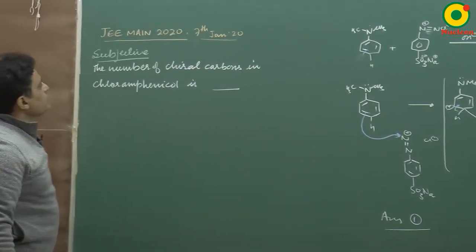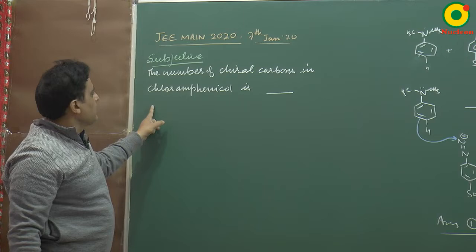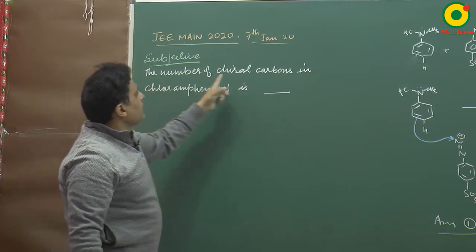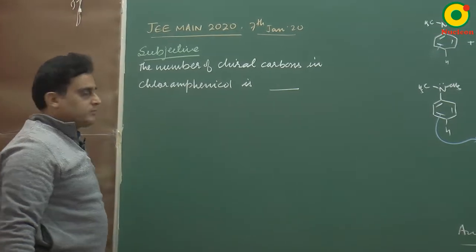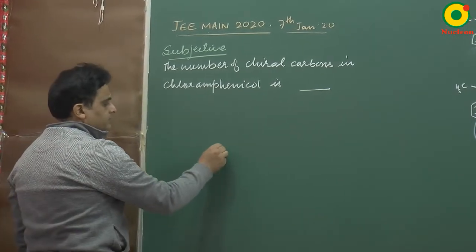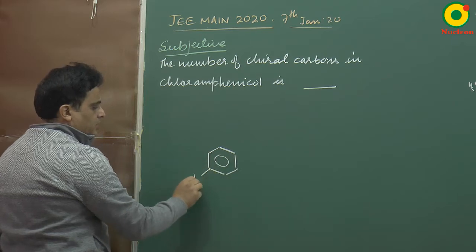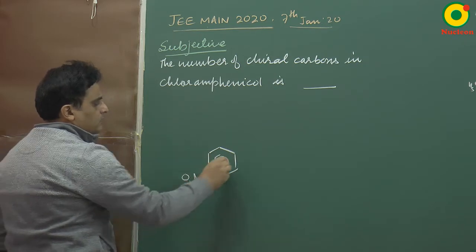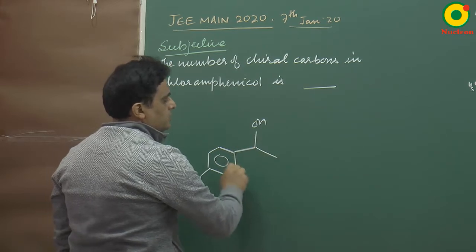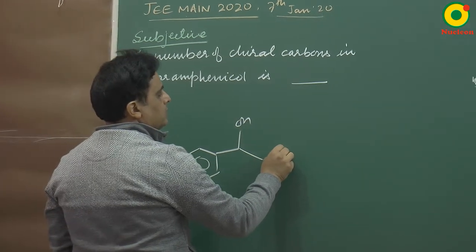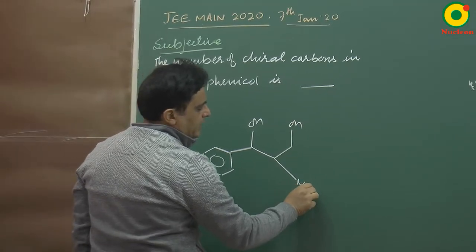JEE Main 2020, 7th January subjective question: the number of chiral carbons in chloramphenicol. Chloramphenicol is a drug whose structure contains NO2, CH2OH, an amide group, and this is the structure.